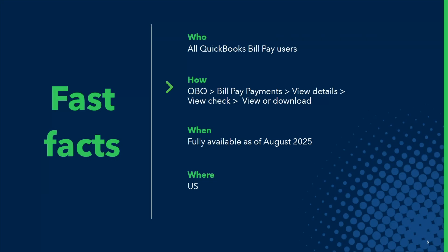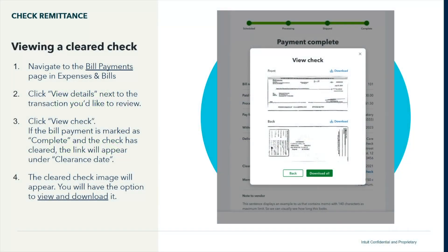To view a cleared check, navigate to the Bill Payments page in Expenses and Bills under My Apps. Click View Details next to the transaction you'd like to review, then click View Check. If the bill payment is marked as complete — which you'll see in the green status bar at the top of the page — and the check image has cleared, the link will appear under clearance dates. You'll be able to view and download the check from there. Super straightforward. We think it will help build trust with vendors and make sure your team knows where the check is in the process.